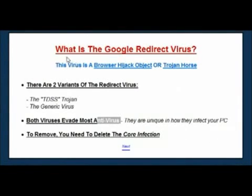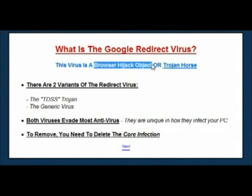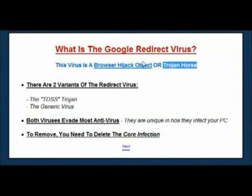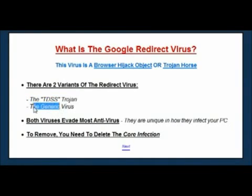So what is the Google redirect virus, or the redirect virus as it's commonly known? This virus is a browser hijack object — a BHO — or a Trojan horse. There are two variations; many people just think there's one, but there are actually two different variations: the TDSS Trojan horse and the generic redirect virus itself.